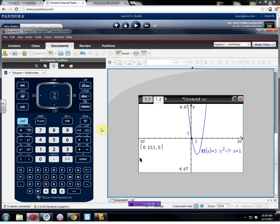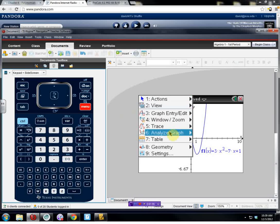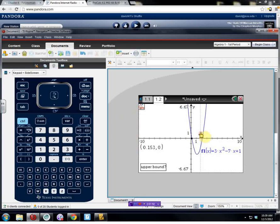I need to do this a second time to get the second 0. So Analyze Graph, 0. We're going to find it over here as well. Those are my two 0s, correct? All right.